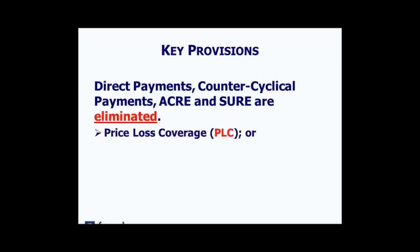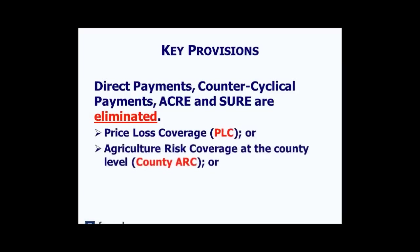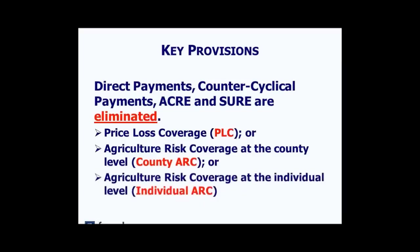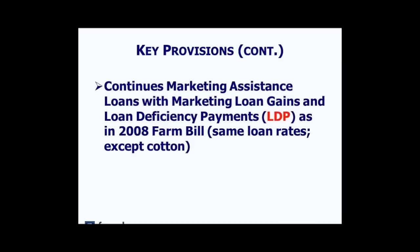In their place we have the Price Loss Coverage Program, PLC, or the Agricultural Risk Coverage at the County Level, which we are calling County ARC, or Agricultural Risk Coverage at the Individual Level, Individual ARC. The Marketing Assistance Loan Program that includes Marketing Loan Gains and Loan Deficiency Payments continues in this Farm Bill as it did in 2008, with one exception — the loan rates for cotton.